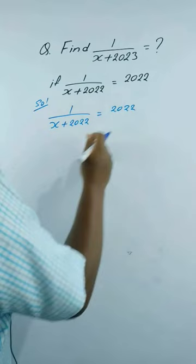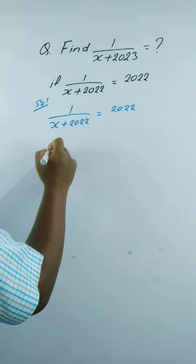Now, the reciprocal of the left hand side will be equal to the reciprocal of the right hand side. So this will be x plus 2022 is equal to 1 by 2022.